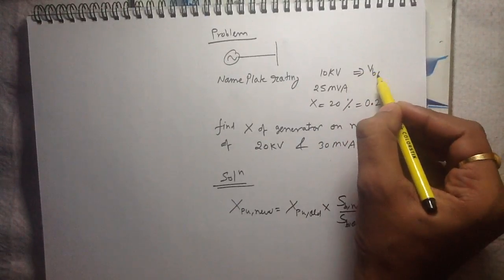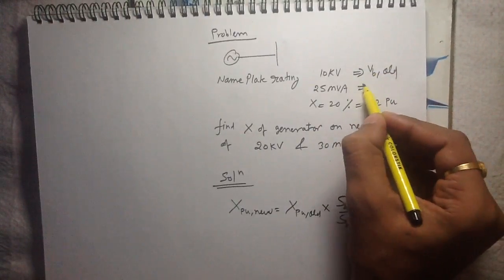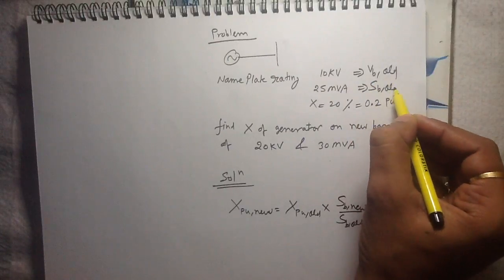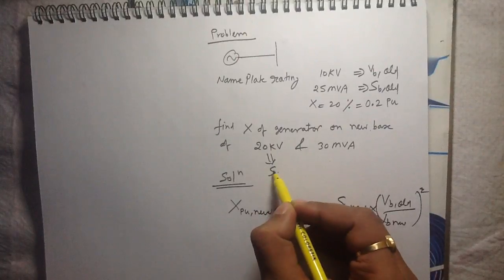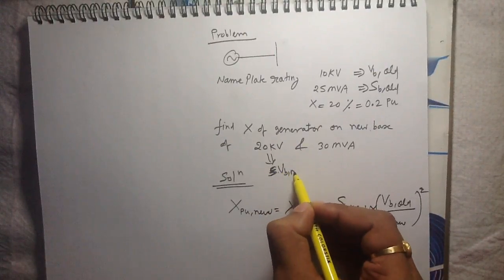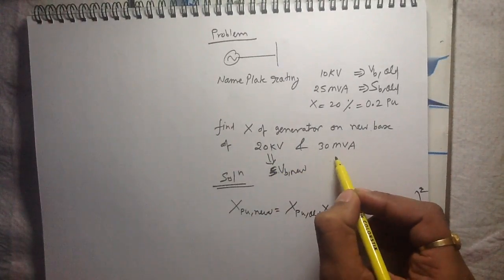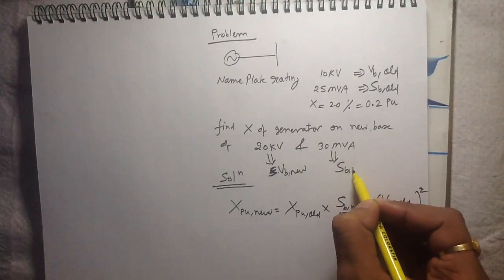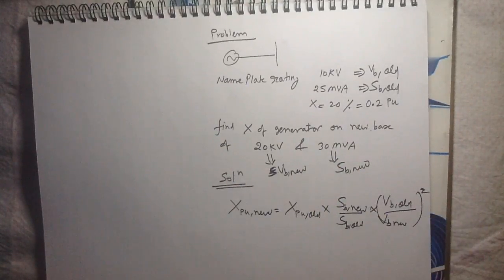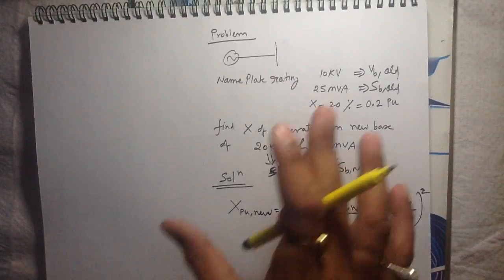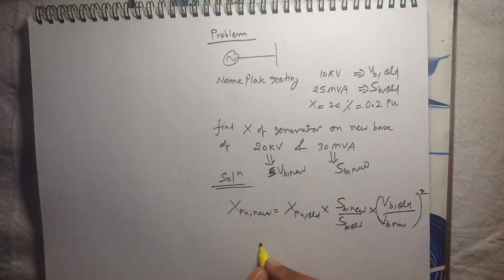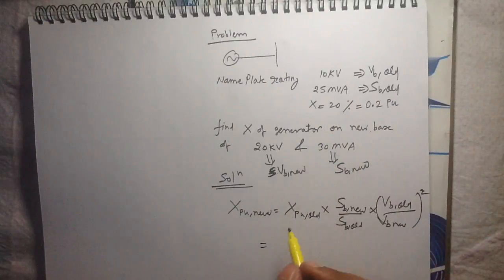This is the old base voltage and this is the old base power. On a new base voltage of 20kV and on a new base power of 30mVA, we have to find out the new per unit reactance. Put all these values in this formula.